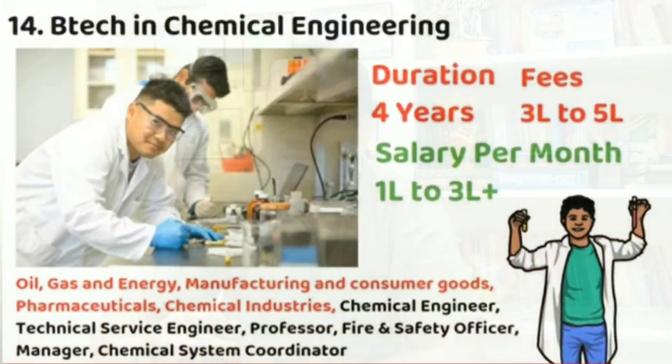The next branch is B.Tech in Chemical Engineering. After COVID, there is increased demand for Chemical Engineering and it is available at many colleges. Duration is 4 years with fees of 3 to 5 lakhs. Salary per month is 1 to 3 lakhs. Companies hiring include oil companies, gas companies, energy companies, manufacturing, consumer goods, pharmaceuticals, and chemical industries. Job roles include chemical engineer, technical service engineer, professor, fire and safety officer, manager, and chemical system coordinator.